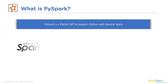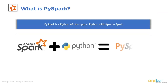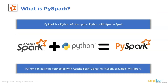PySpark is a Python API to support Python with Apache Spark. Python can easily be connected with Apache Spark using the PySpark provided PyFolder library. When it comes to analyzing or working with large data sets, PySpark is essential and is a widely searched tool among data engineers because of its functionality.